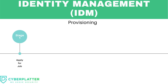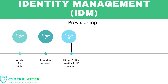Let's understand how provisioning is done in identity management. Whenever an employee tries to join a company, the process starts from applying for the job. Once the interview goes successfully and the employee is selected, the HR team collects user information like personal details, SSN numbers, driving license, government-issued identity details, and address.